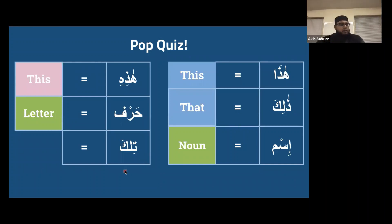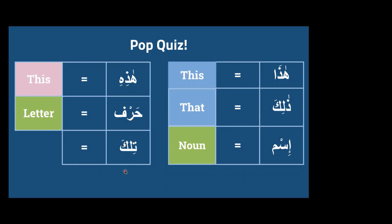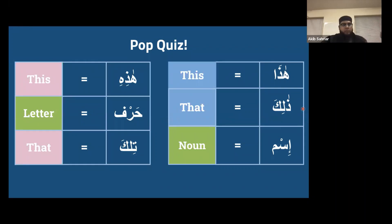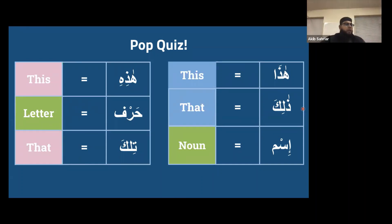The last word from last week is 'tilka.' 'Tilka' means 'that' for the feminine pronoun. Just like 'dhalika' is used for a masculine word like 'al-kitab' (the book), 'tilka' is used for something like 'ummatun.' For example: 'tilka ummatun qad khalat' - that nation has already passed. They're gone, they're not near us. If that community were in our society, Allah might have used 'hadhi,' but He used 'tilka' to show they've long passed.